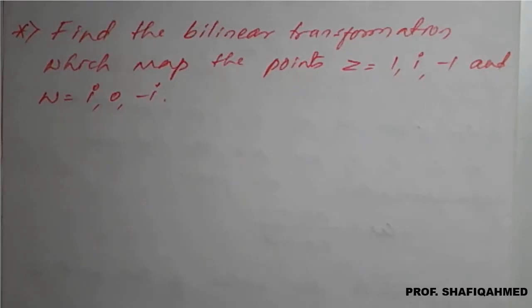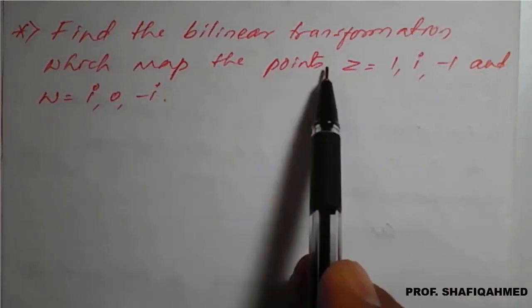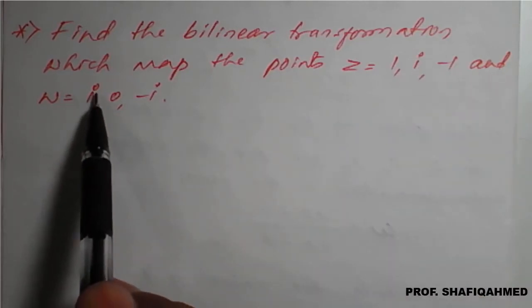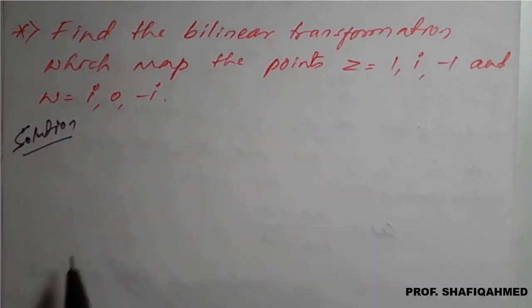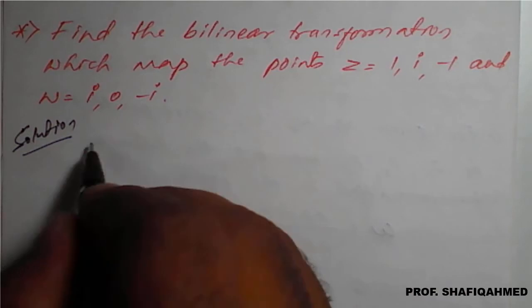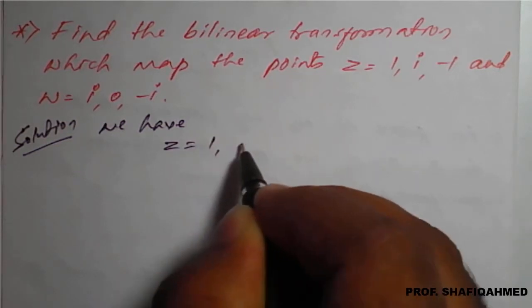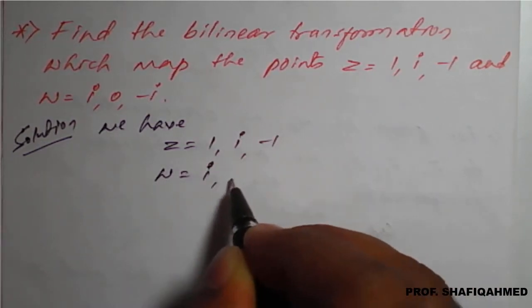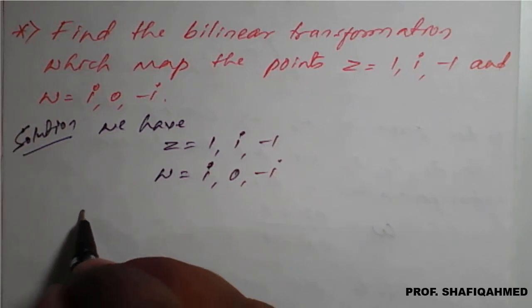Hello everyone. In this lecture we'll see a problem on bilinear transformation. The problem is: find the bilinear transformation which maps the points z = 1, i, and -1 to w = i, 0, and -i. So the given z values and w values we have to collect: z1 = 1, z2 = i, z3 = -1, and w1 = i, w2 = 0, w3 = -i.